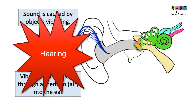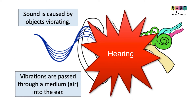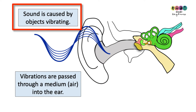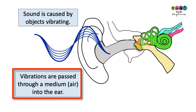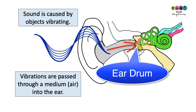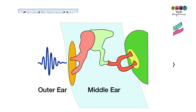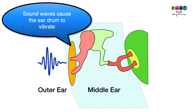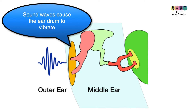Let's discuss how we generate hearing. Sound is caused by objects vibrating, and those vibrations are passed through a medium — in most cases air — into the ear. The pinna funnels those sound waves into the auditory canal, where they hit the eardrum, the tympanic membrane, causing it to vibrate.